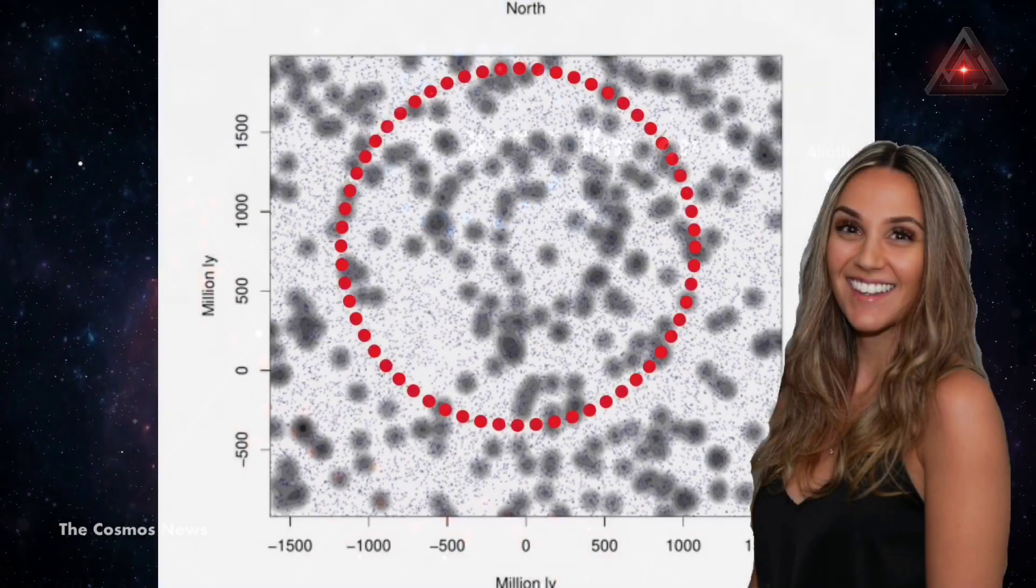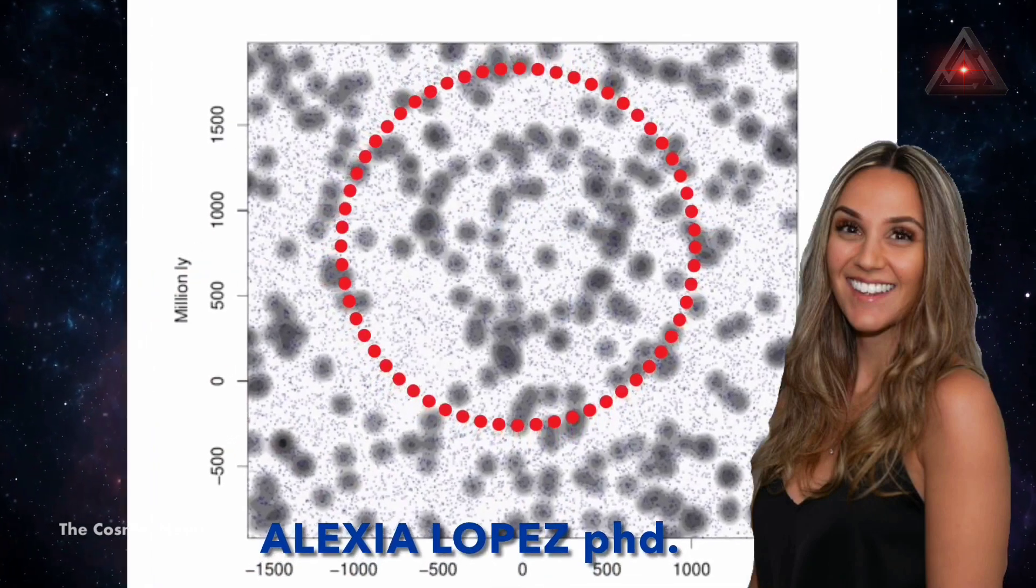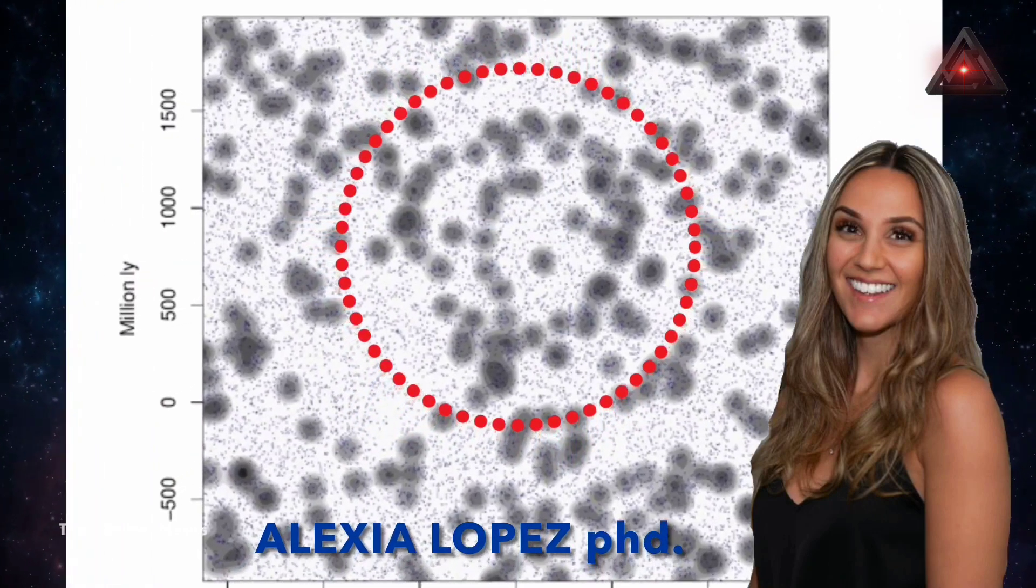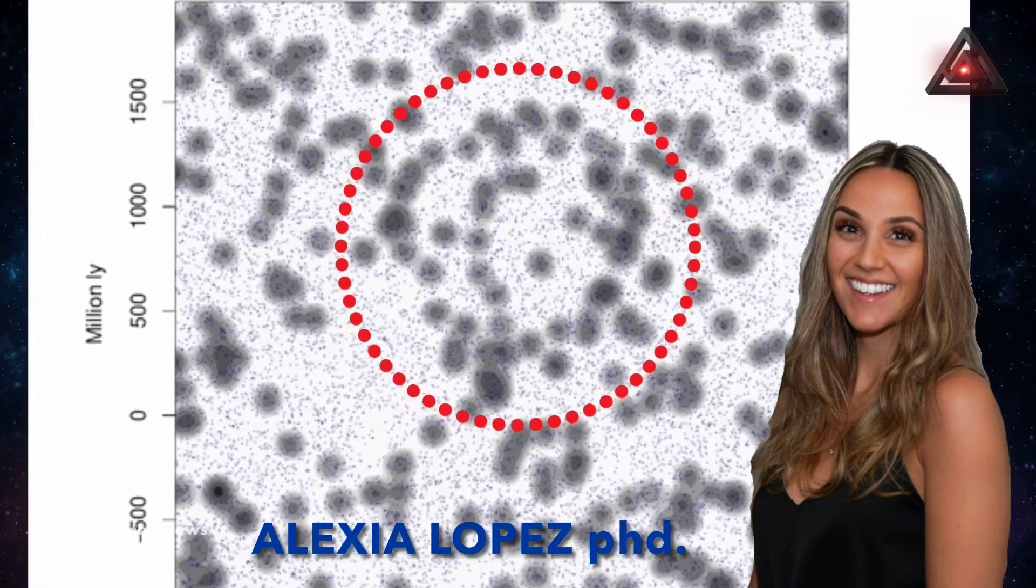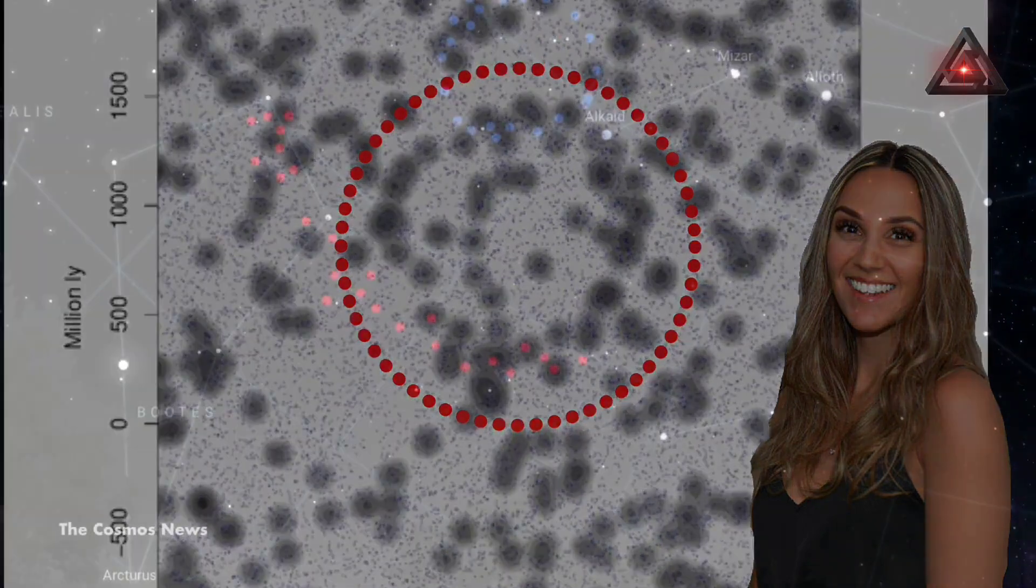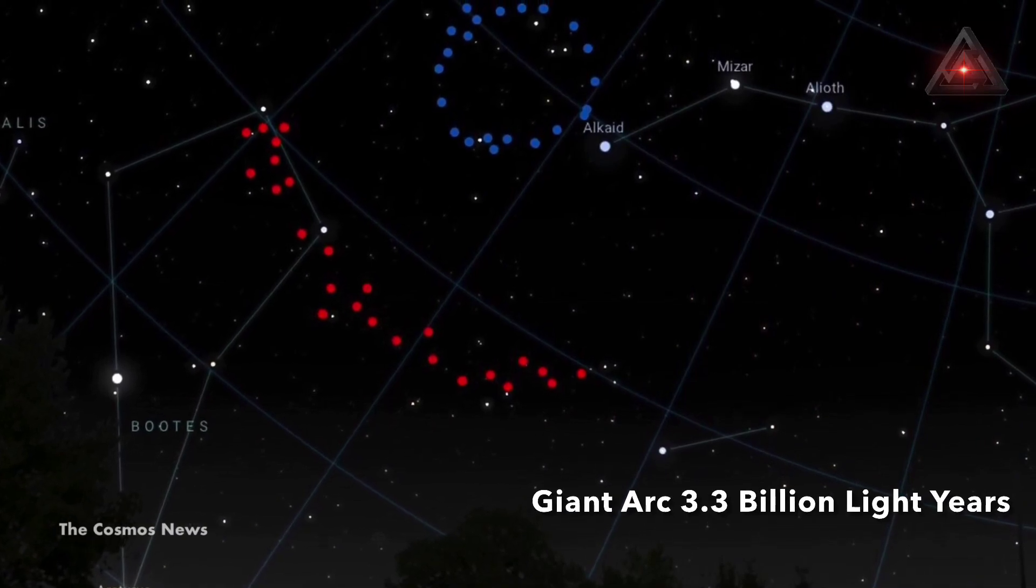The structure is made up of galaxies and galaxy clusters and is the second of such a huge size to be identified by Alexia Lopez, a British PhD student. She also found the Giant Arc, a structure spanning 3.3 billion light-years, three years ago.